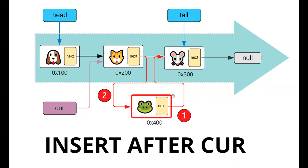First, we need to set the new node's next pointer to the current next pointer so we don't lose the link — in this case it will point to the mouse. Then we go back and change the current next pointer and update that to point to the new node. So let's go and see how this is done in Python.